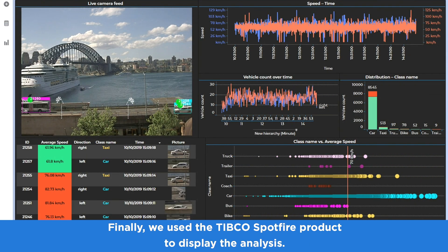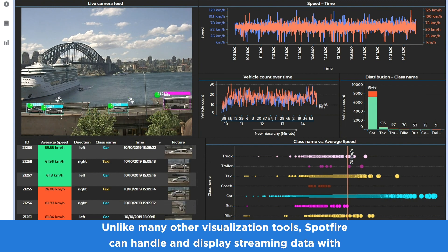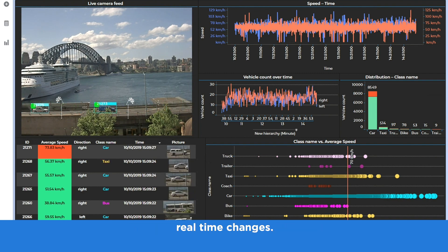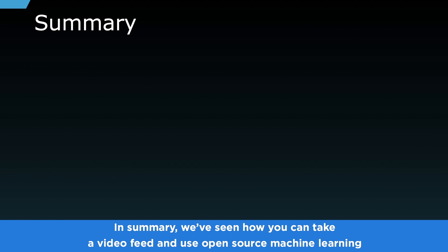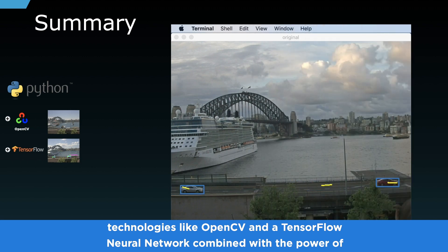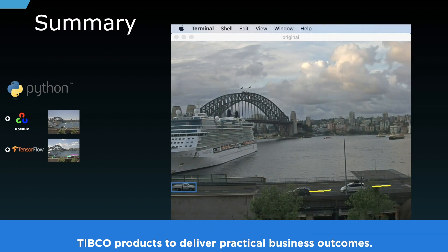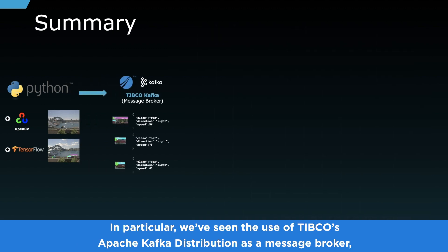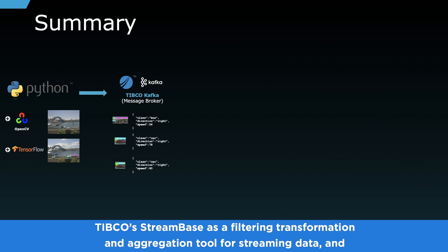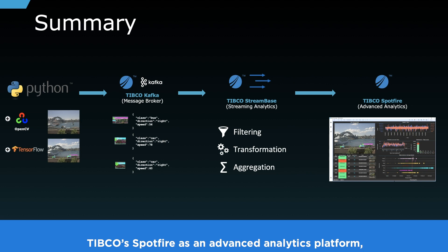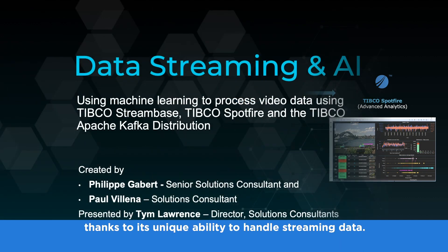Finally, we use TIBCO Spotfire to display the analysis. Like many other visualization tools, Spotfire can handle and display streaming data with real-time changes. In summary, we've seen the use of TIBCO's Apache Kafka distribution as a message broker, TIBCO StreamBase as a filtering, transformation, and aggregation tool for streaming data, and TIBCO Spotfire as an advanced analytics platform thanks to its unique ability to handle streaming data.